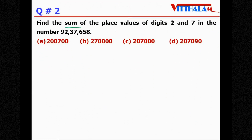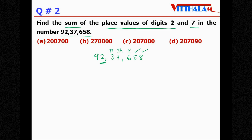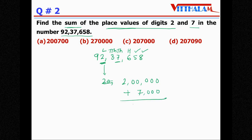Question Number 2: Find the sum of place value of digits 2 and 7 in the number 92,037,658. The digit 2 is at the twenty-lakhs place, so its place value is 2 lakhs. The digit 7 is at the thousands place, so its place value is 7 thousand. Adding them: 2 lakhs 7 thousand. So the answer is C.